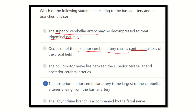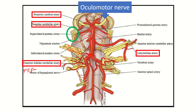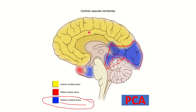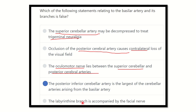The oculomotor nerve lies between the superior cerebellar and posterior cerebral arteries — true, as we saw in the diagram. The labyrinthine branch is accompanied by the facial nerve — true, it is accompanied by both the facial nerve and the vestibulocochlear nerve. So our final answer is: the posterior inferior cerebellar artery is NOT the largest branch — that option is false for the basilar artery. Thank you all.